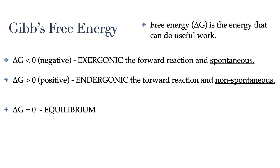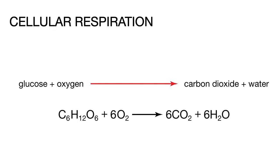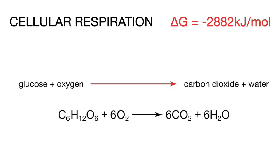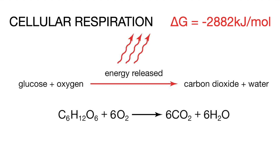So what is the connection between Gibbs free energy and biology? To make that connection, let's look at cellular respiration. Cellular respiration, just like the burning fire in the previous example, is just a combustion reaction — so it is an exergonic reaction. It has a negative delta G; more specifically, it has a delta G value of negative 2882 kilojoules per mole. What that means is that if you have one mole of glucose, it will release that much energy — originally stored as chemical potential energy in the bonds of glucose.